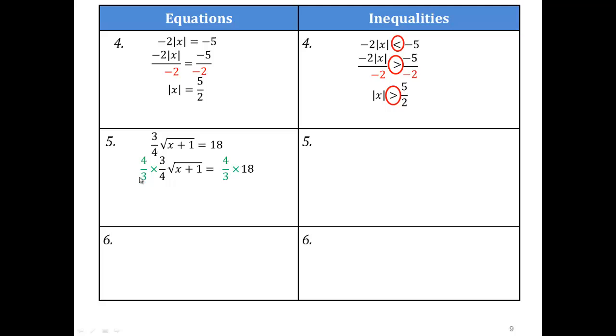So if you're trying to get rid of 3 quarters times square root x plus 1, that's how you would read it, equals 18. You have to multiply both sides by 4 thirds, the reciprocal of 3 quarters, because then 4 and 4 would divide out. 3 and 3 would divide out. You get 1. And 3 goes into 18 six times. And so that will make it 24. You can do the same if you have an inequality. And remember, we're multiplying by positive, so the inequality will be preserved.